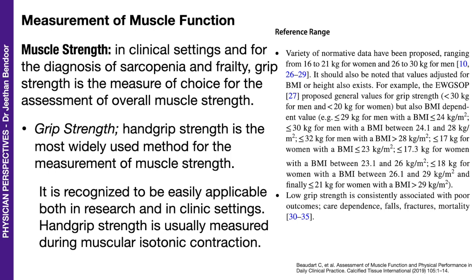Grip strength is the measure of choice for the assessment of overall muscle strength and is the most widely used method. It is easily measured using a dynamometer, which is available in the market for physicians to buy and is not as expensive as one might expect. Here is a reference range recommended by the group. We know that low grip strength is consistently associated with poor outcomes: care dependence, falls, fracture, and mortality.